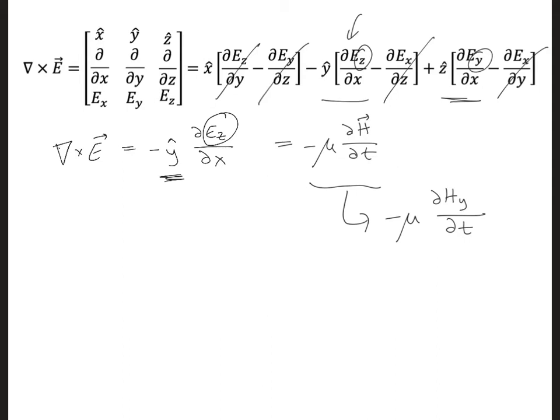So here when we write E more generally, it has a vector on top of it to show that it has a direction. So putting all this together, we have, there's a minus sign in front, dE_z dx is equal to minus mu dhy dt, and we can cancel the negative signs on both sides.